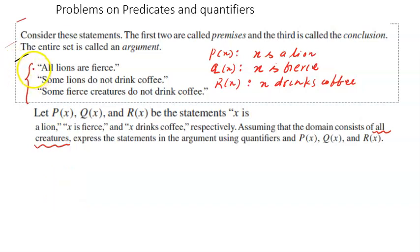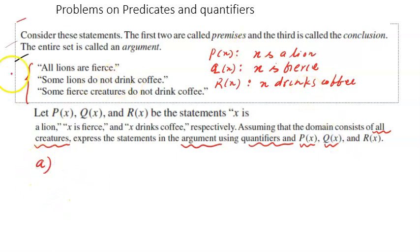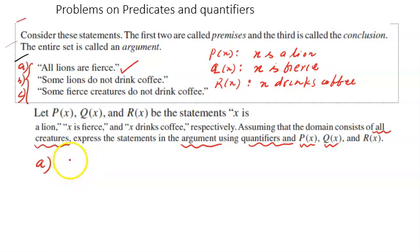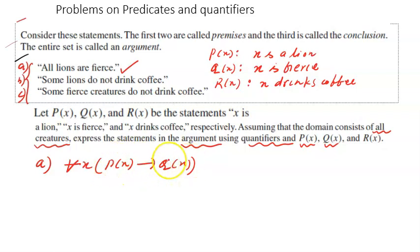They are expecting us to express these statements using quantifiers, px, qx, and rx. The first statement is 'all lions are fierce.' For every x, if x is a lion — if px is true — then x is fierce, which is qx. So: for all x, px implies qx.